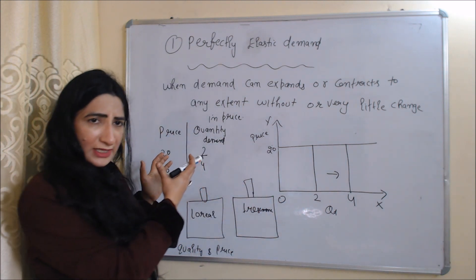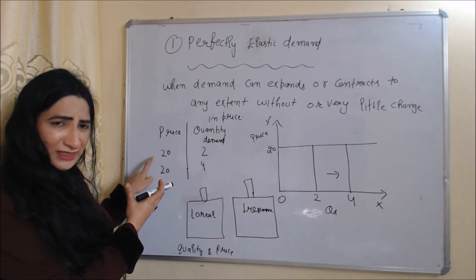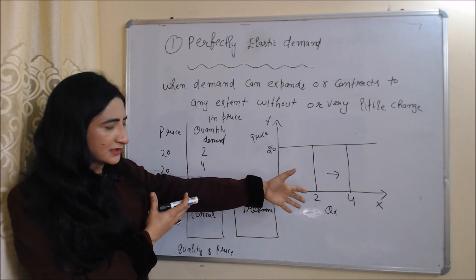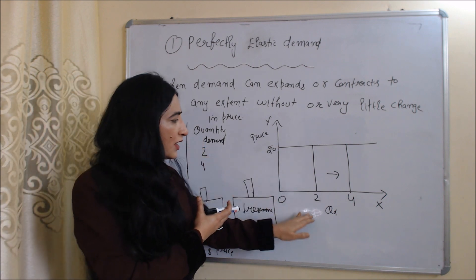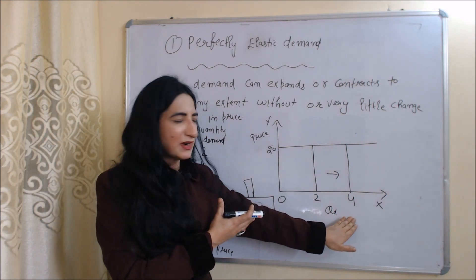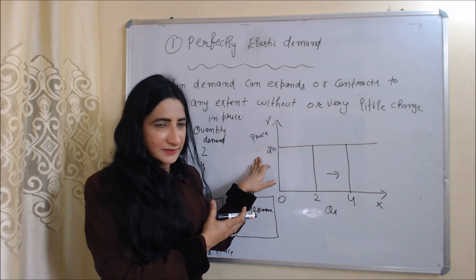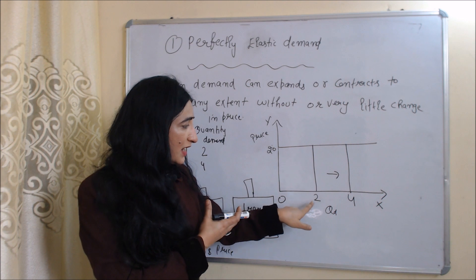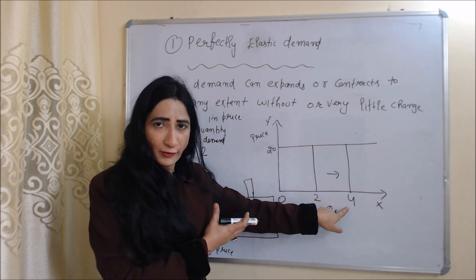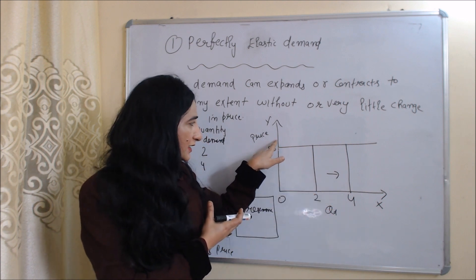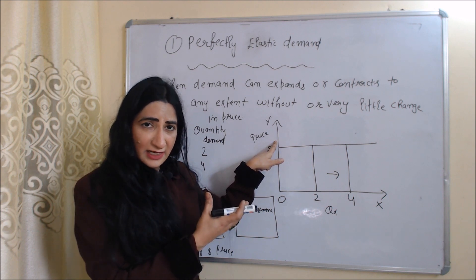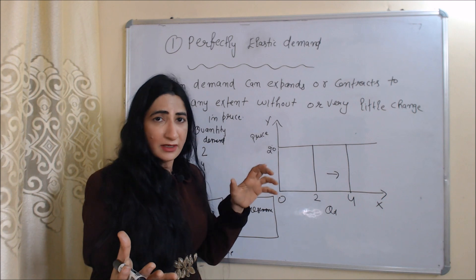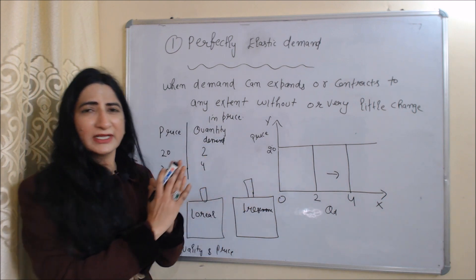In this table you can see the price is the same — 20 and 20 — but our demand is increasing from 2 to 4. You can see the same thing in this diagram. On the x-axis we have quantity demanded, and on the y-axis we have price. The price is the same at 20, but at that same price, demand is increasing from 2 to 4. If the price increases even a little bit, our demand can reduce more — it can even become 0.